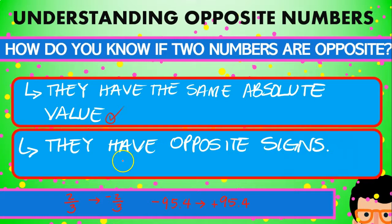The absolute value of 2 thirds is 2 thirds, and the absolute value of minus 2 thirds is also 2 thirds, and the same thing goes for 95.4.